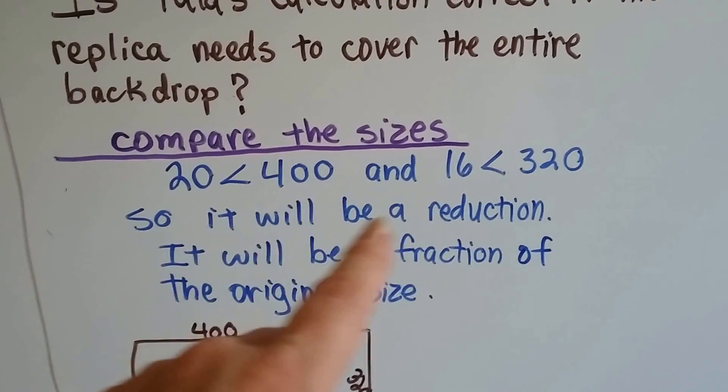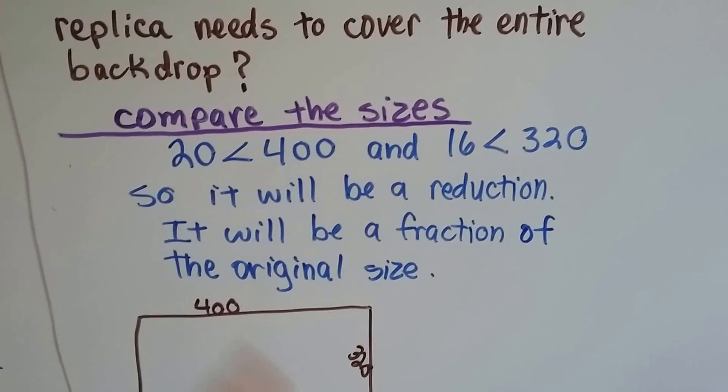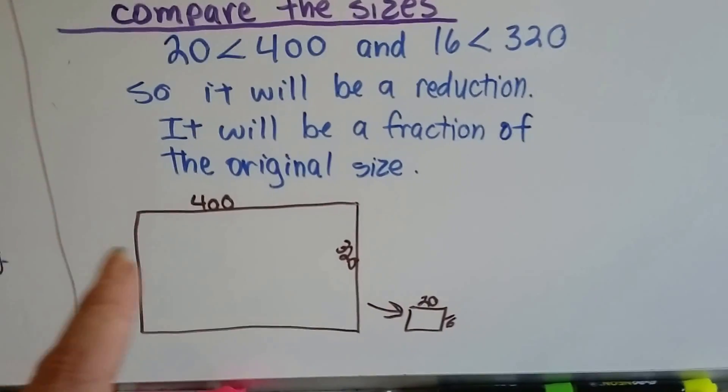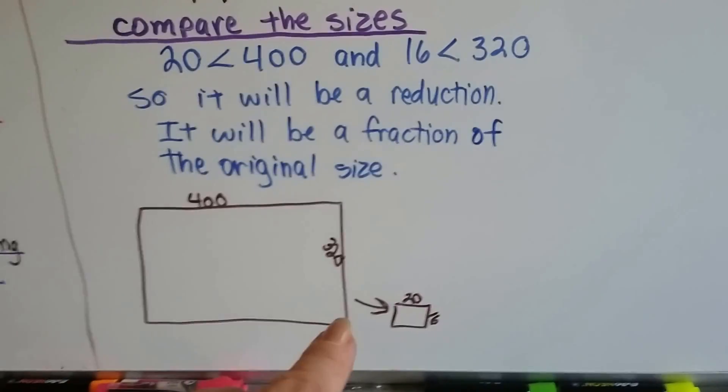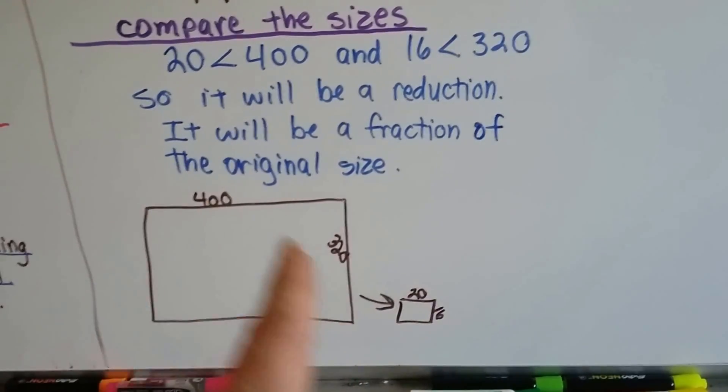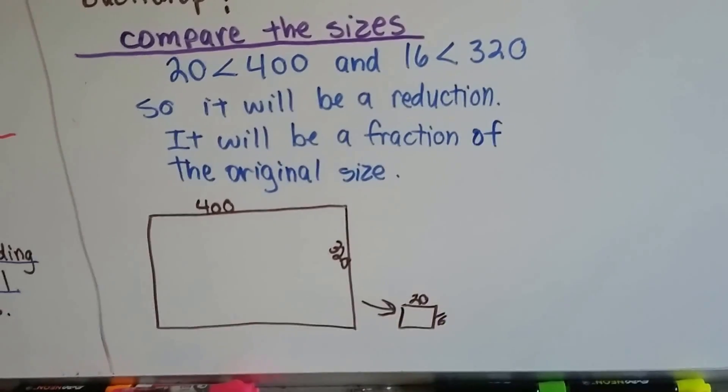20 is less than 400 and 16 is less than 320, so we know it's going to be a reduction. It will be a fraction of the original size. The width was 400, the height was 320, and Tala and Emma need to make it 20 and 16. That's a big reduction.